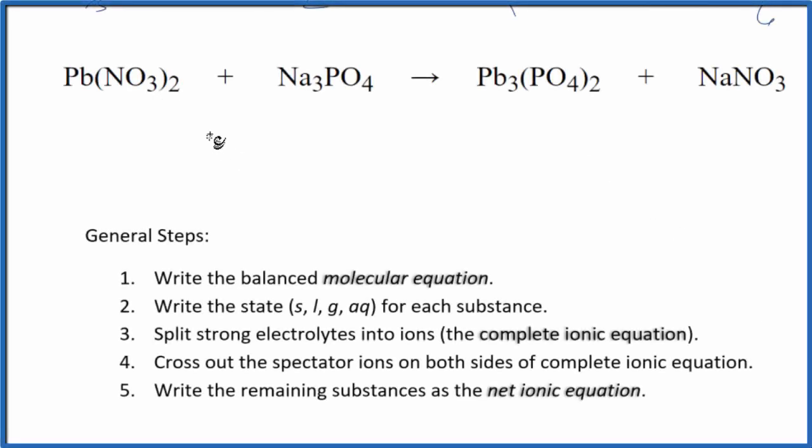In this video, we'll write the balanced net ionic equation for lead(II) nitrate plus sodium phosphate. The first thing we do with net ionic equations is balance the molecular equation. The coefficients for this equation are 3, 2, 1, and 6. If you need help balancing the molecular equation, there's a link in the description.